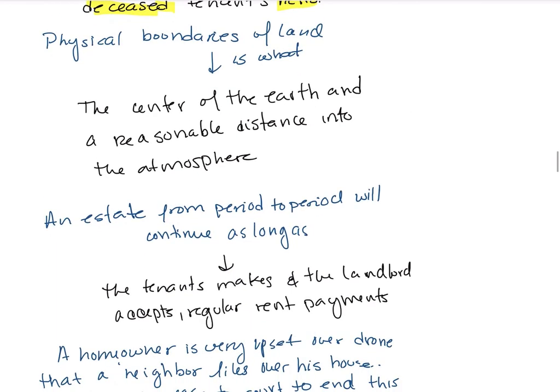The physical boundaries of land extend from the center of the earth to a reasonable distance into the atmosphere. An estate from period to period will continue as long as the tenant makes regular rent payments to the landlord.